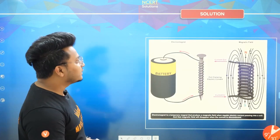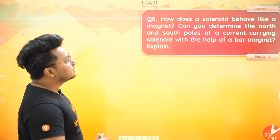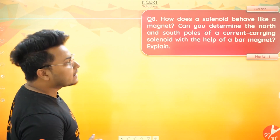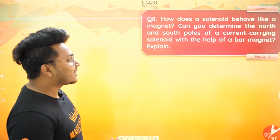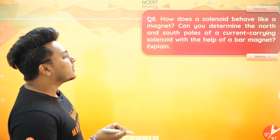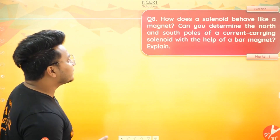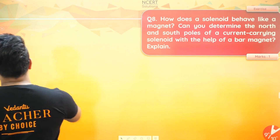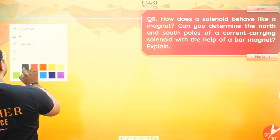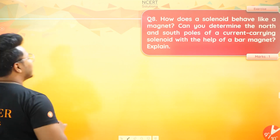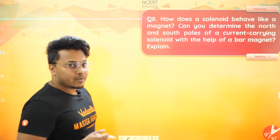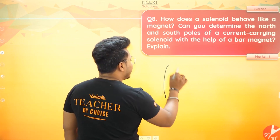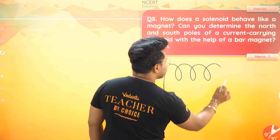Question number 8 on your screen is very simple: How does a solenoid behave like a magnet? It definitely behaves like a magnet. Can you determine the north and south of a current-carrying solenoid with the help of a bar magnet? Let's see. When current flows through the coil, the solenoid generates a magnetic field.